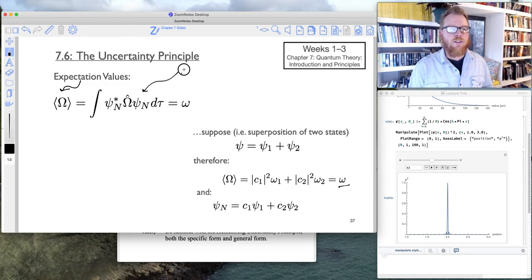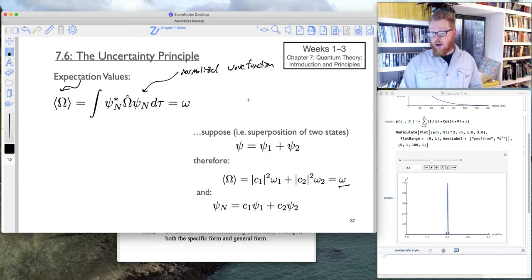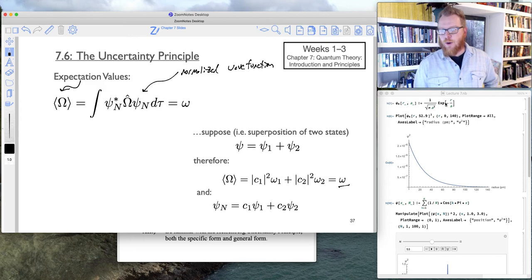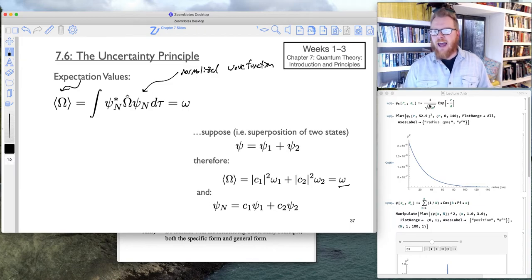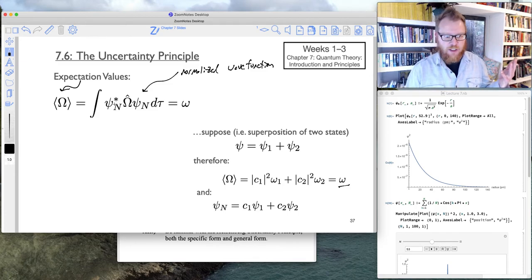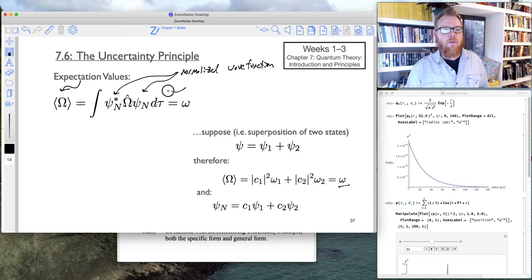I just want to walk you through what is going on in the math here. So psi_n corresponds to a normalized wave function. First the wave function has to be normalized, and we're going to play with this wave function that I've got going on right here. Recall we normalized this last time in our Friday session. Psi star_n is the complex conjugate of a normalized wave function.